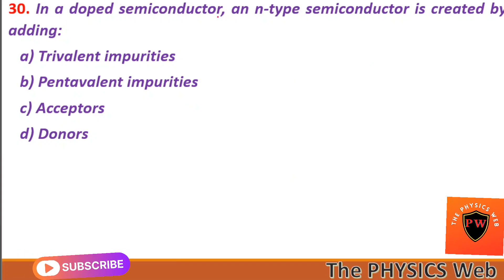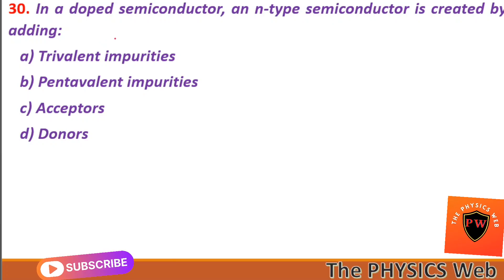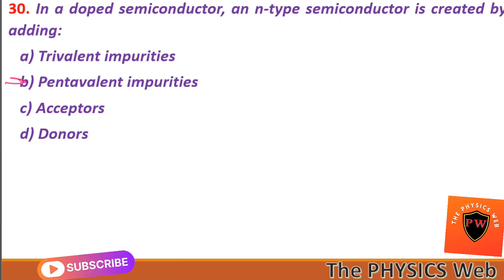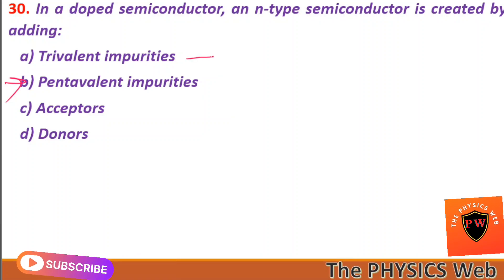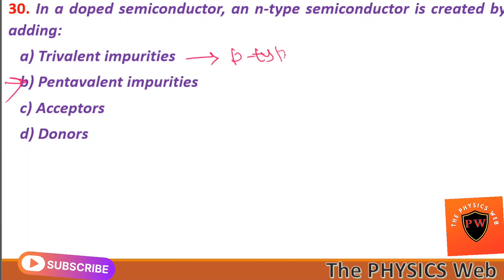Next, question thirty: in a doped semiconductor, an N-type semiconductor is created by adding a pentavalent impurity. So B is your correct option. A trivalent impurity will give you a P-type semiconductor.